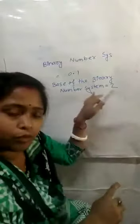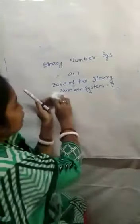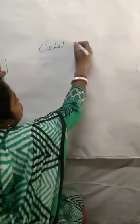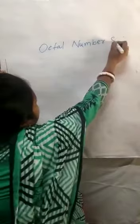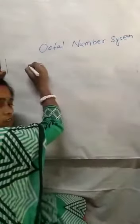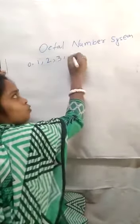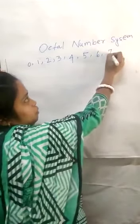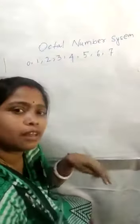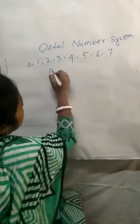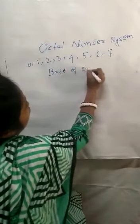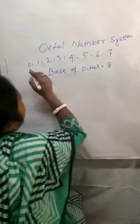We will elaborate that in the next session. Now we have to discuss about the octal number system. The octal number system contains 0, 1, 2, 3, 4, 5, 6, 7. There are 8 numbers in the octal number system. So the base of the octal number system is 8.